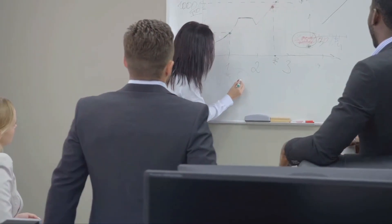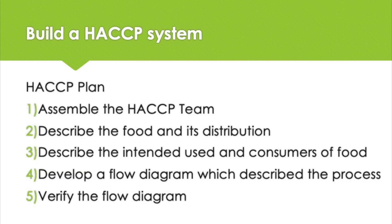To develop a HACCP plan, there are five tasks to accomplish before the application of the HACCP principles: assemble a HACCP team, describe the food and its distribution, describe the intended use and consumers of the food, develop a flow diagram which describes the process, and verify the flow diagram. After the five preliminary tasks are completed, the seven principles of HACCP can be applied to ensure safe food production.